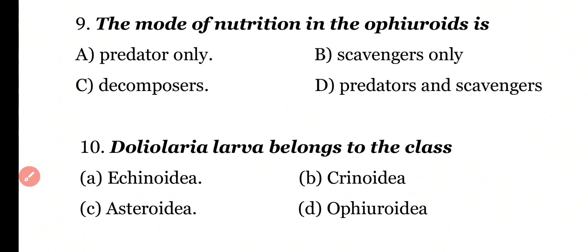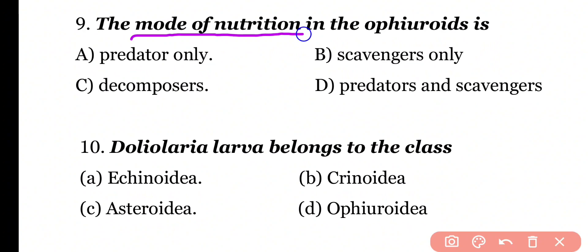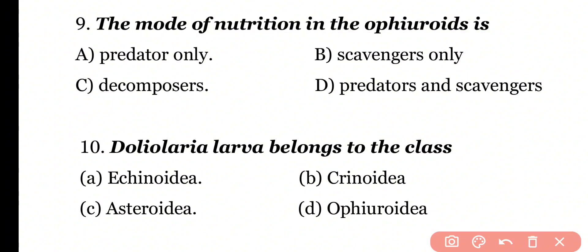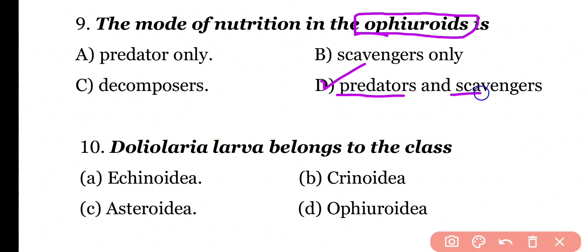Question 9: The mode of nutrition in Ophiuroids is Predator, Scavengers, Decomposers, or Predators and Scavengers? Correct answer is Option D. Organisms of class Ophiuroidia belonging to Echinoderms are mostly predators and scavengers in terms of mode of nutrition.